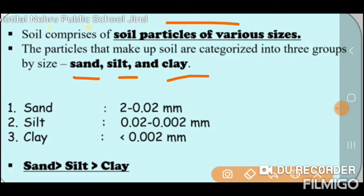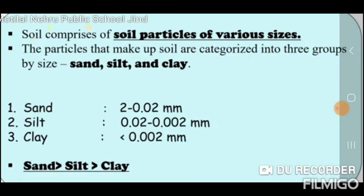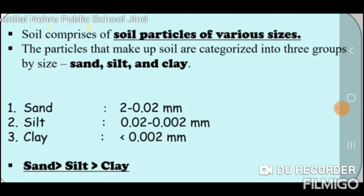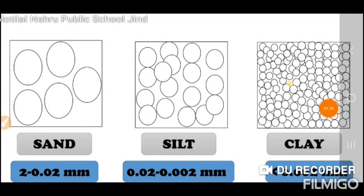Soil particles are divided into three groups: sand, silt, and clay. The size of sand particles is 2 to 0.02 mm. The size of silt particles is 0.02 to 0.002 mm. The size of clay particles is less than 0.002 mm. This covers sand, silt, and clay soil particle sizes. Most of the gravel, pebbles, and stones can also be seen in this figure.